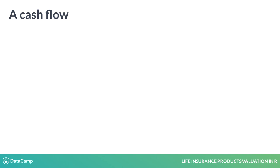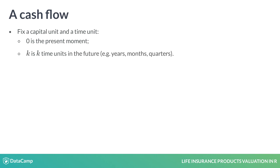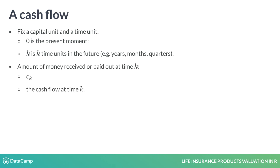To set the scene, fix a capital unit, say one euro, and a time unit, say one year. Our notation uses zero to denote the present moment — that's right now — and k refers to k time units in the future. The amount of money to be received or paid at time k is ck, that's the cash flow at time k.